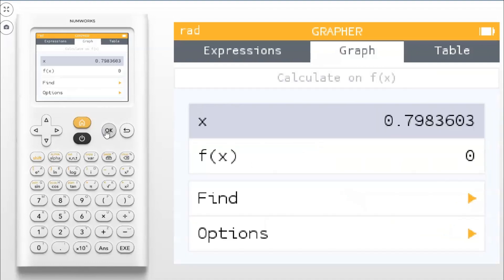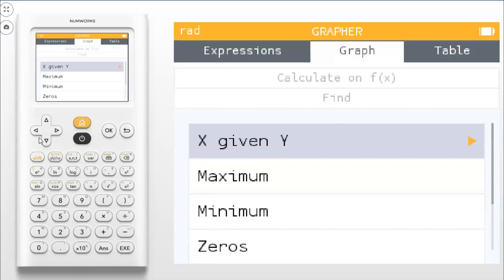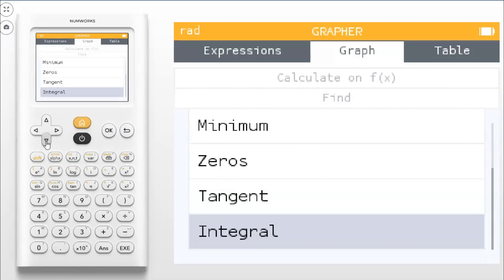There's a calculate tab here where you could do all different kinds of things. You could type in an X value to get a Y value. You could even go down to find, where you could find max, min, zeros, if you don't see them. You could find X given Y. You could find the tangent, the integral. That's more of a calculus-level thing. But pretty cool feature in that Grapher App. Tons of really cool things you could do.